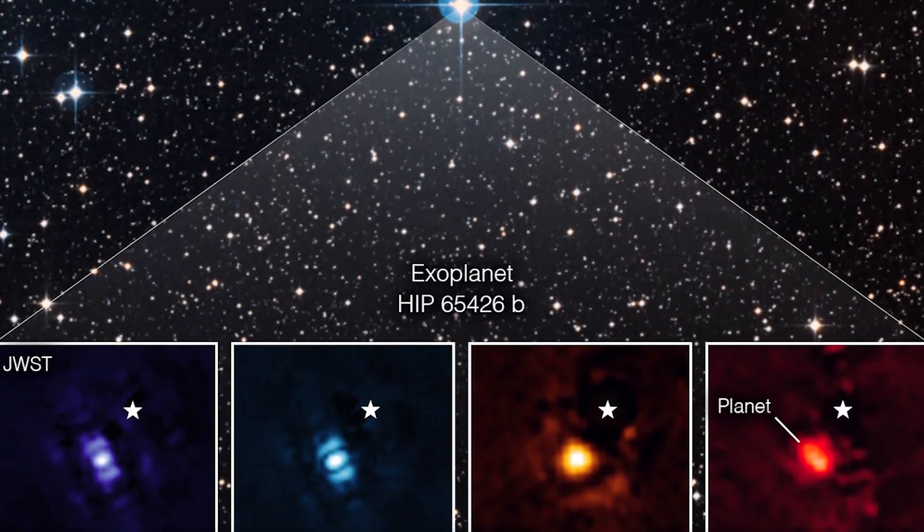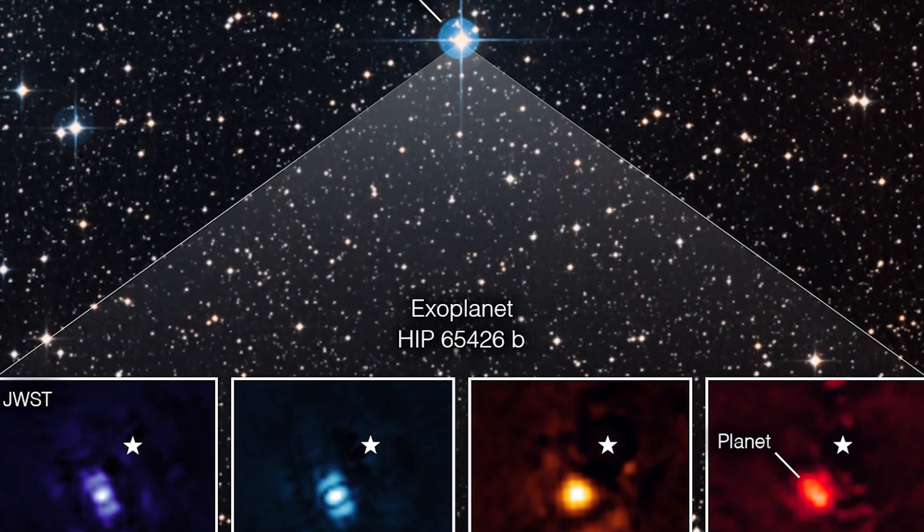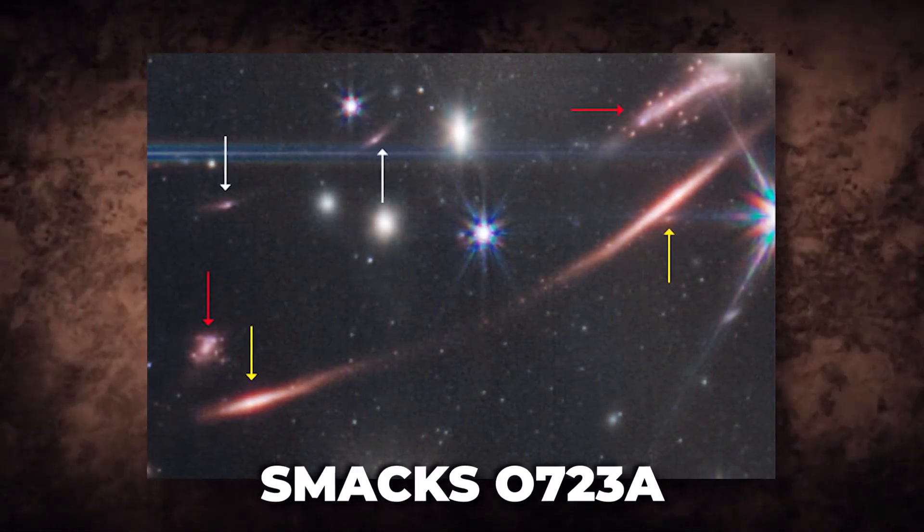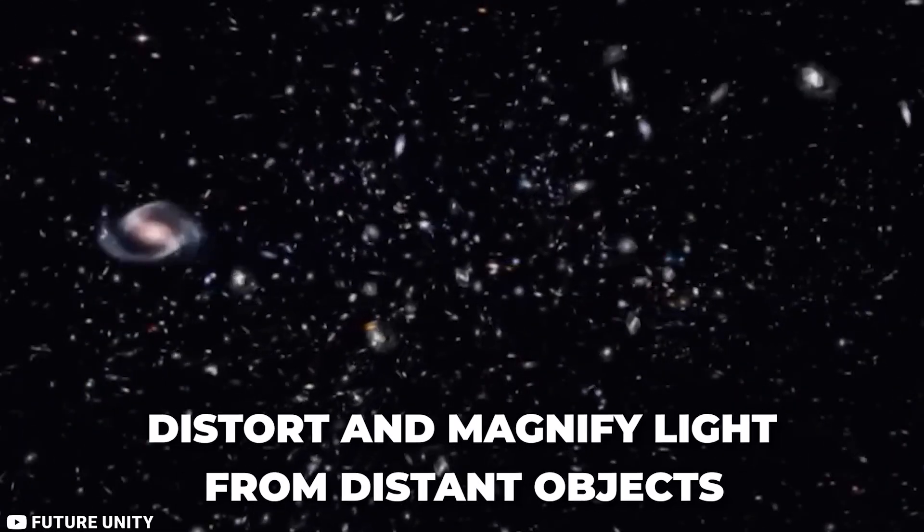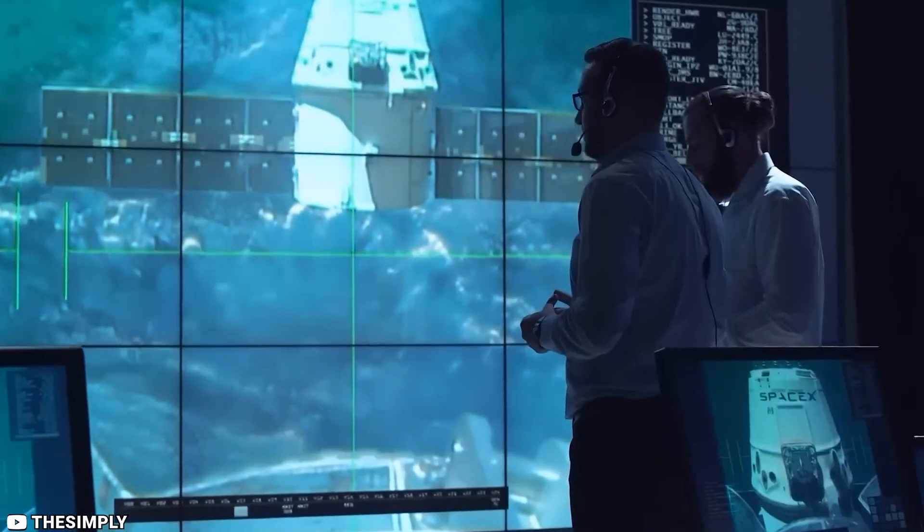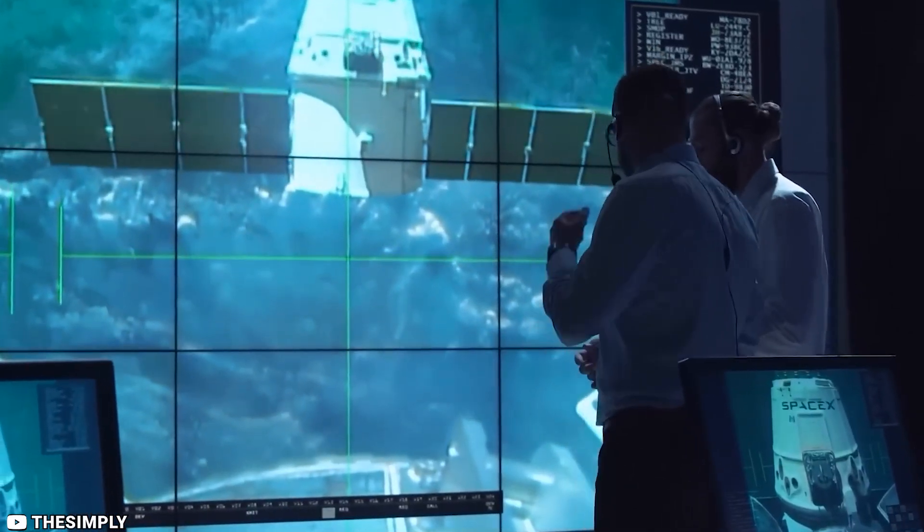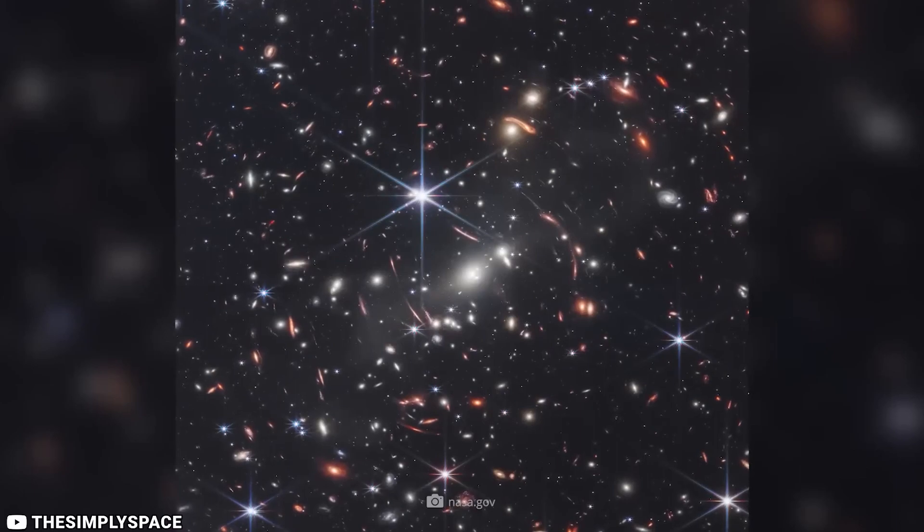Moreover, the JWST has also taken breathtaking pictures of the SMACS-0723A galaxy cluster, which can distort and magnify light from distant objects behind it. This unique ability allows telescopes to detect even the faintest and most remote galaxies.